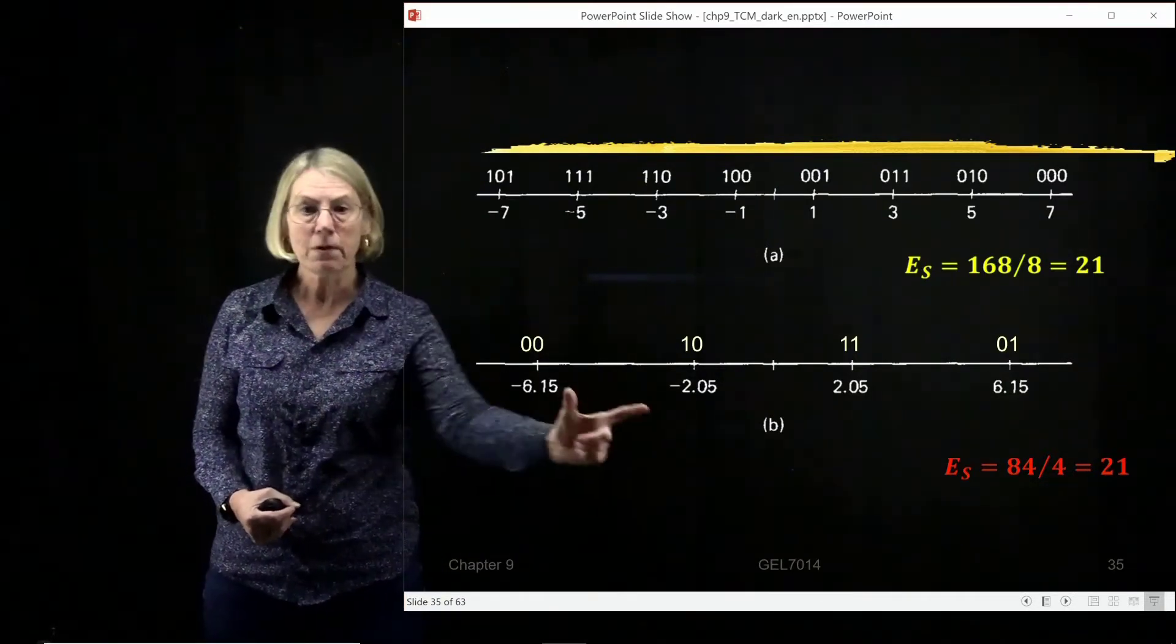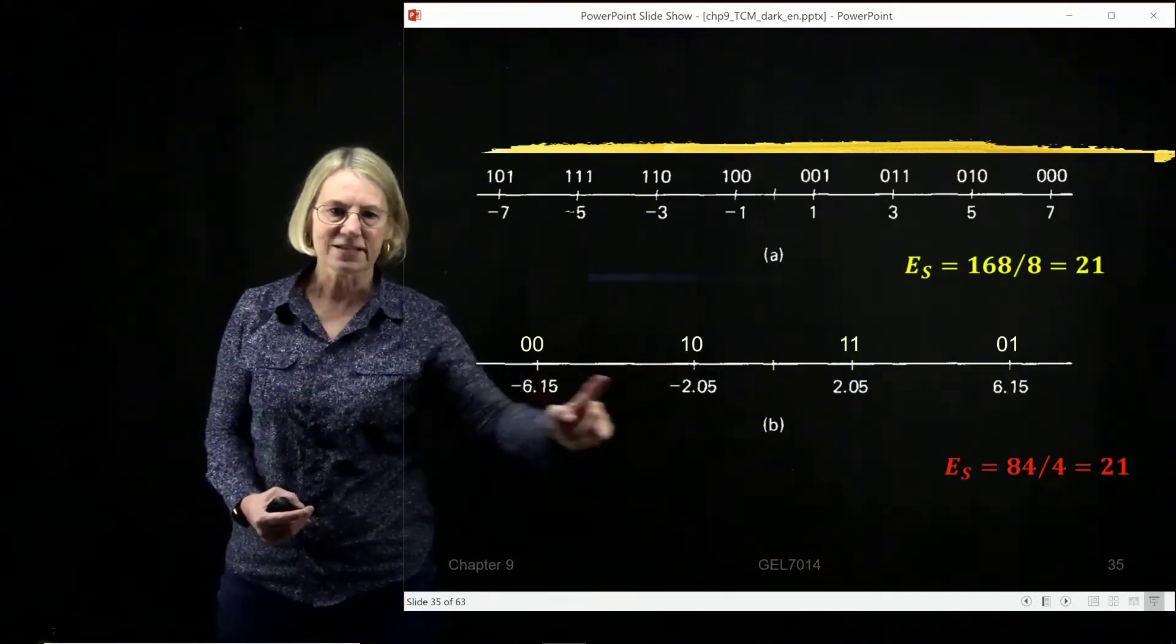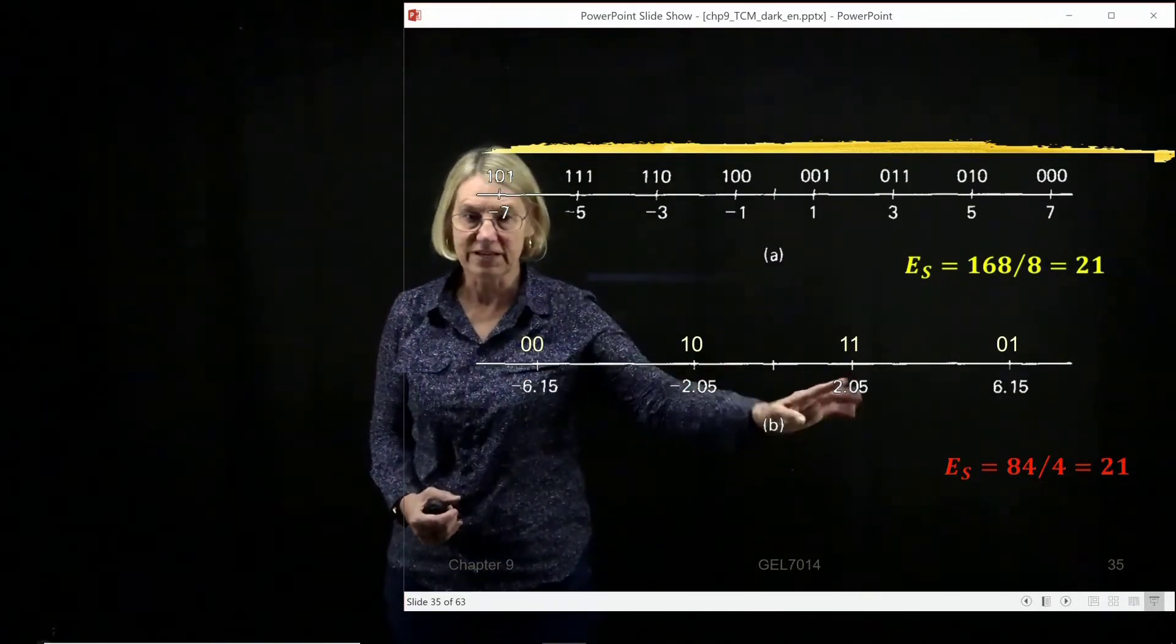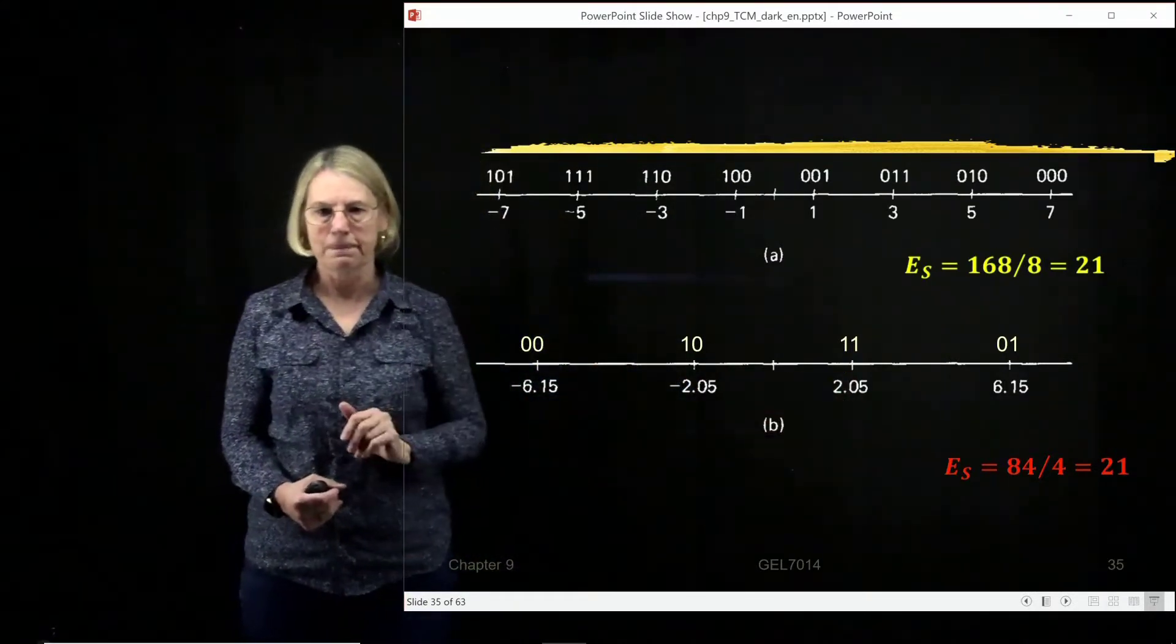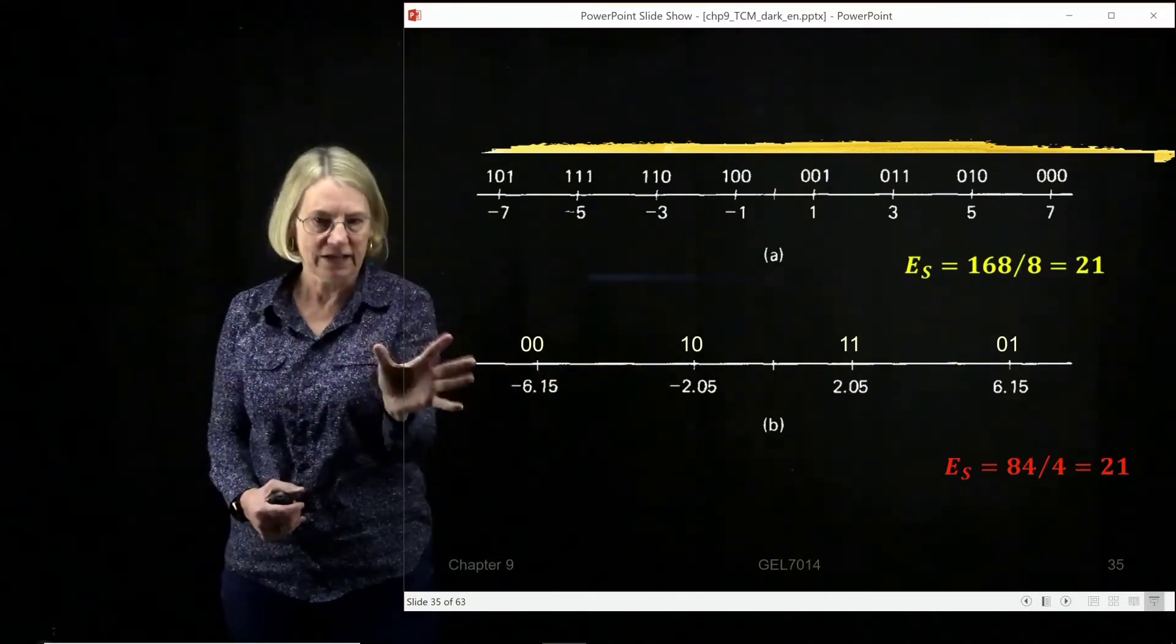Now, for uncoded, the minimum distance is quite clear. It's the difference between minus 6.15 and minus 2.05, or between 2.05 and minus 2.05 and 2.05. It's 4.1. So the distance, the minimal distance, uncoded, quite clear.